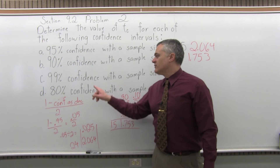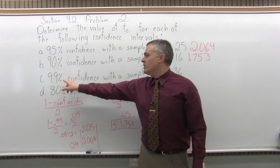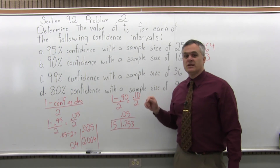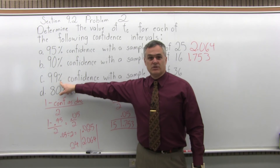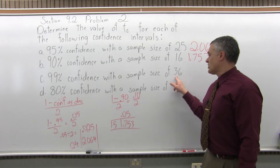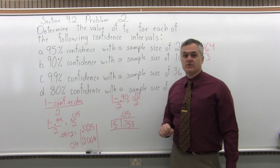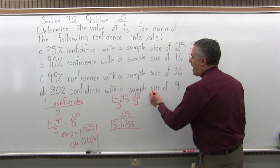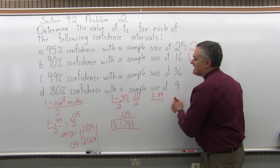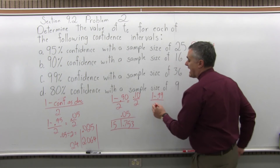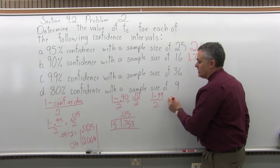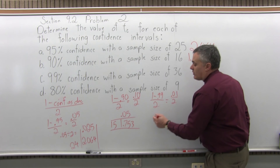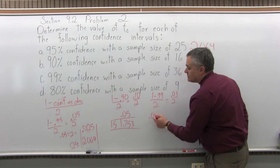Same process again for C. We want a 99% confidence interval with a sample size of 36. Determine the correct column based on your level of confidence, the correct row based on your sample size, and see where they intersect. For the column: 1 minus the level of confidence as a decimal — so 99% would be 1 minus 0.99 — divided by 2. That gives 0.01 divided by 2, which is 0.005.